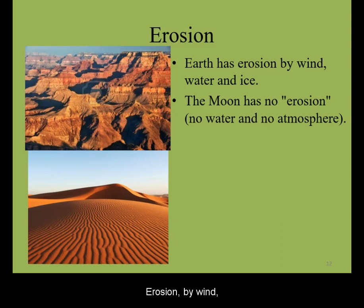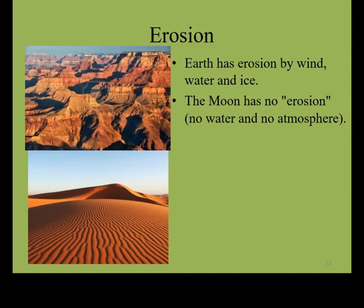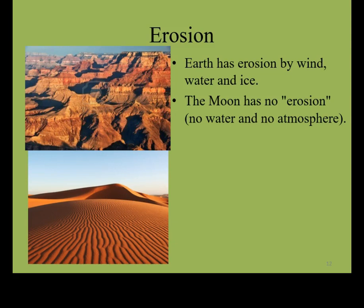Erosion by wind, water, and ice are all present on the surface of the Earth. The Moon has no erosion.